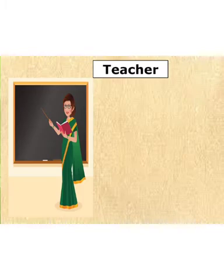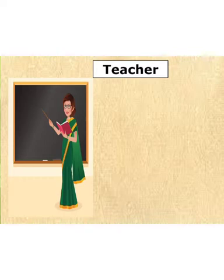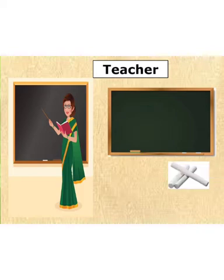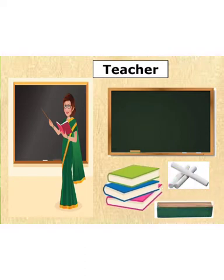Our first helper is a teacher. A teacher gives us knowledge and helps us in reading and writing. A teacher needs a blackboard to write on. When she has to tell us something, she writes on the board with the help of chalk. After writing, she needs a duster to rub it. And sometimes she needs books also to give us knowledge.